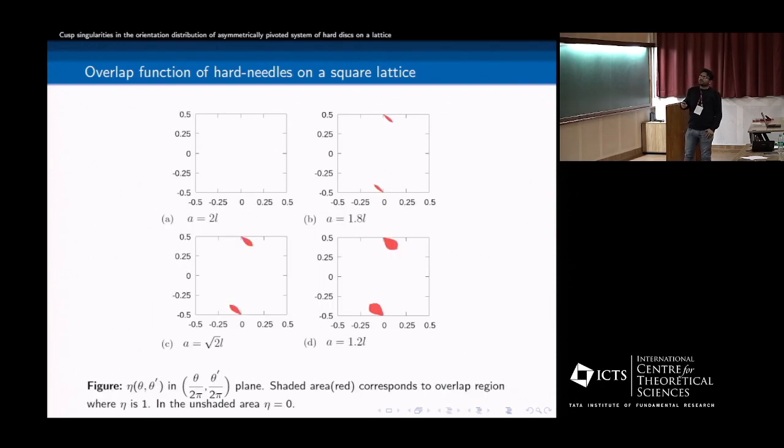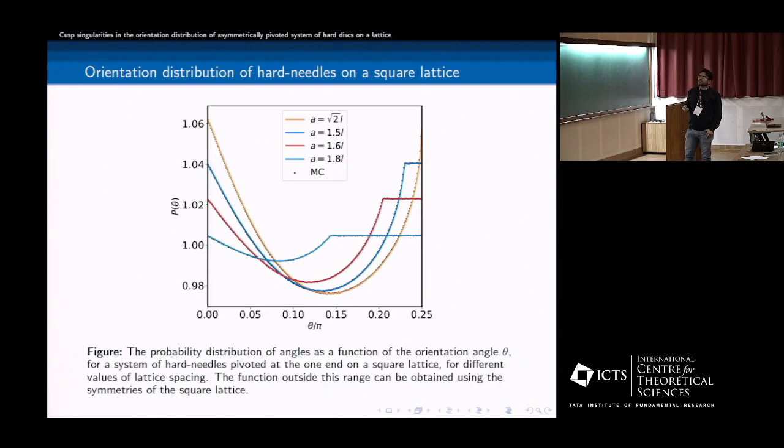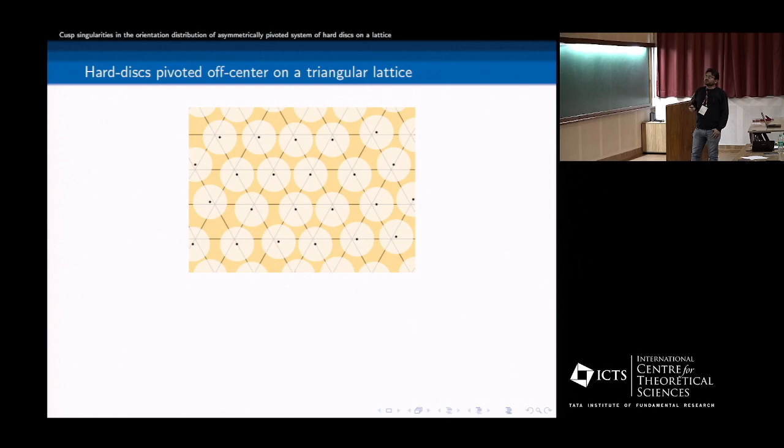So here is the overlap function of hard needles on a square lattice. So this is given by this. And here is the orientation distribution of the hard needles on a square lattice. So as you can see, the Monte Carlo, these dots are the Monte Carlo simulations. And the colored lines are the theoretical prediction. So they actually match quite well. Even though, for example, the density of the dimer model is not known exactly, but in the regime that we have seen, so there are various ways to find out the density of dimers. So they are actually matched to three orders, three degrees of accuracy. So this is the published work.